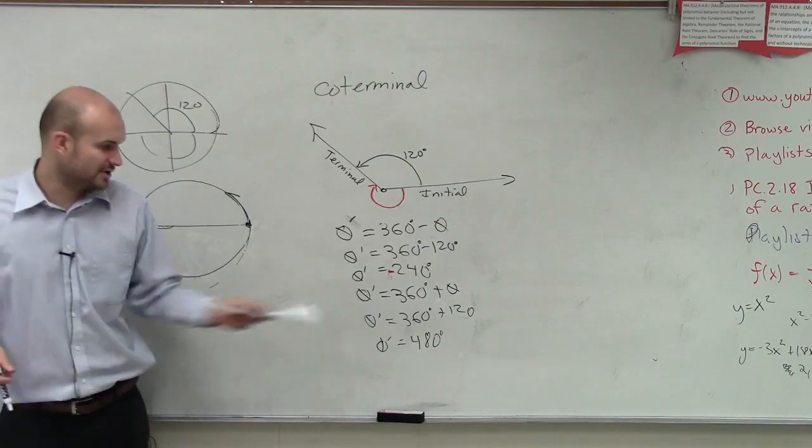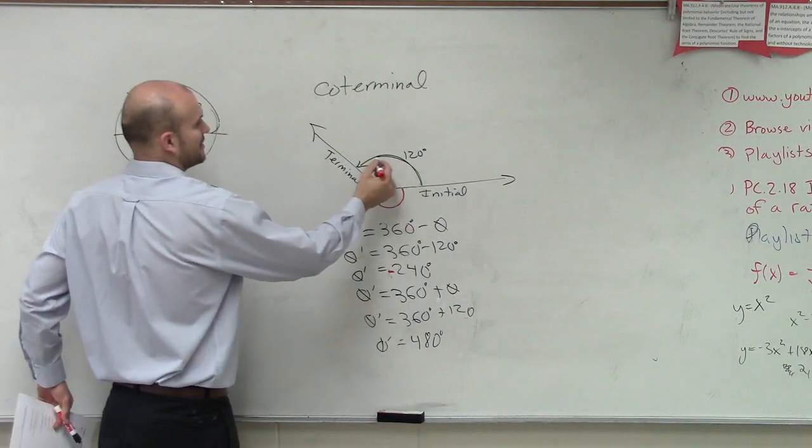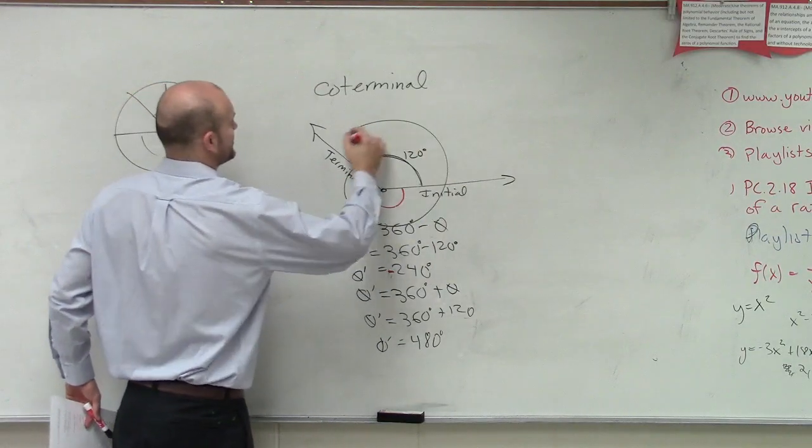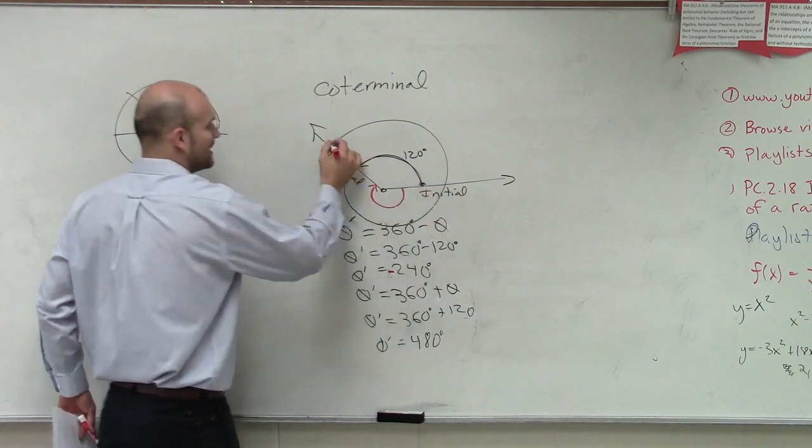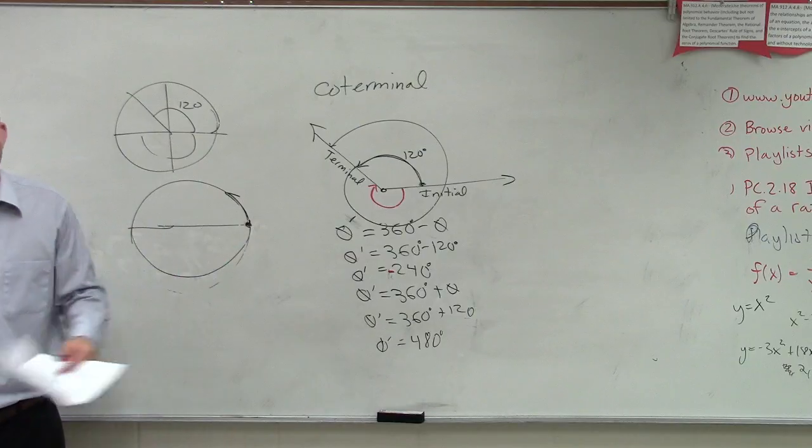So let's look at what that degree, 480 degrees. Let's do it. So I go from here to here is 120, right, and then I go around 360 degrees more, did I start at my initial and end at my terminal? Then I have coterminal angles.